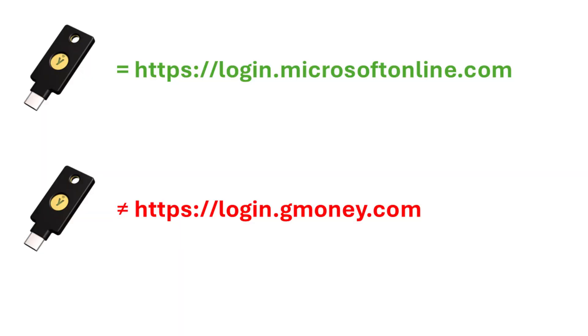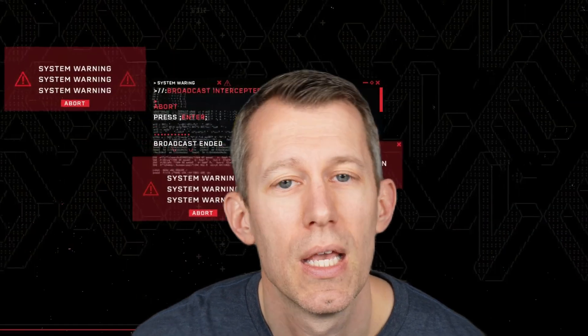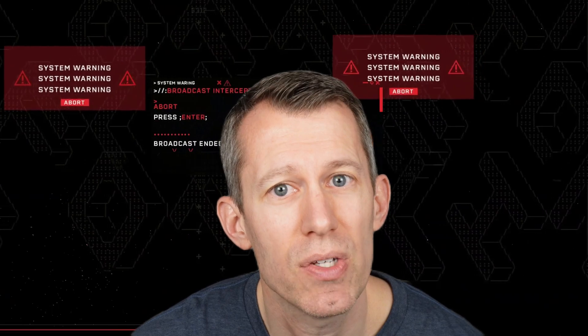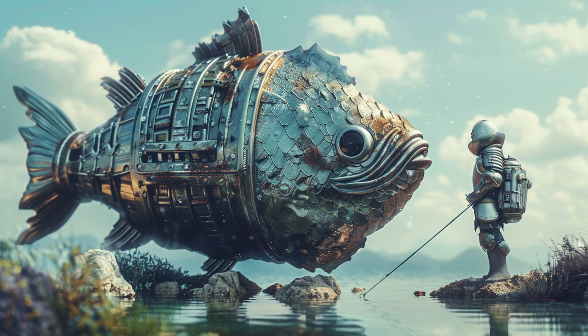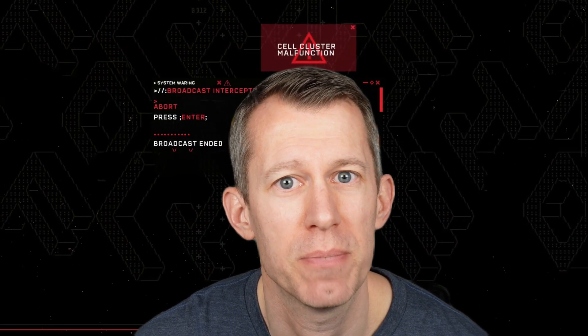When a YubiKey is registered with a specific service, it is bound to that service's URL. If a third party tries to get you to log into another site with their URL, the YubiKey simply won't allow it — it will only work with the URL with which it is registered. This significantly limits the hacker's ability to intercept access codes and replay them. This is why security keys are typically called phishing-resistant multi-factor authentication, because of that feature where the service URL is bound to the key.